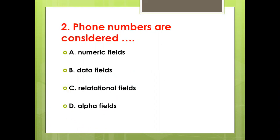Third bit: Stock numbers are considered — Option A: Numeric fields. Option B: Data fields. Option C: Relational fields. Option D: Alpha fields.